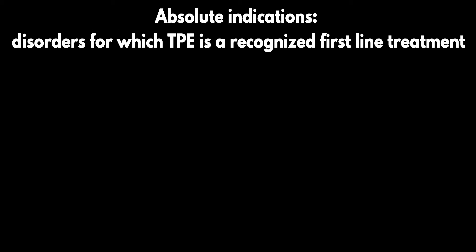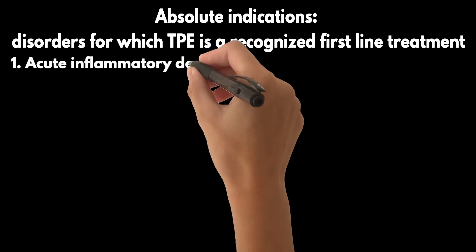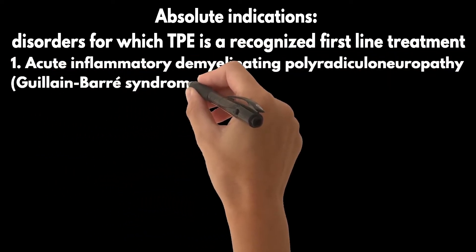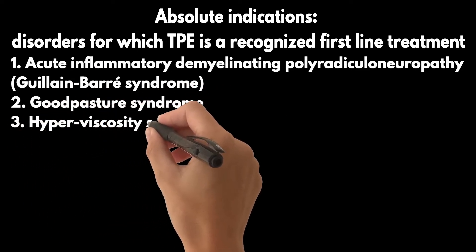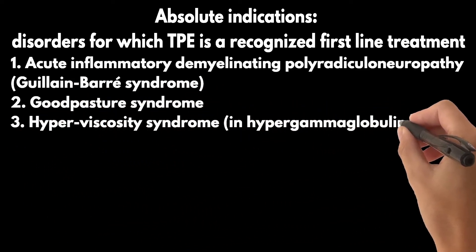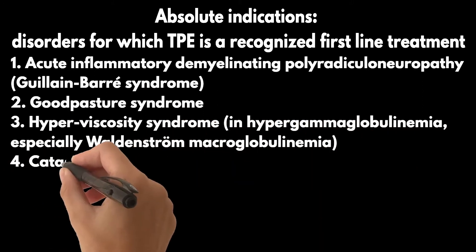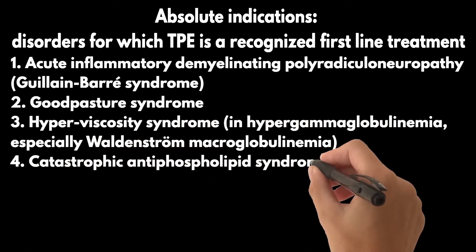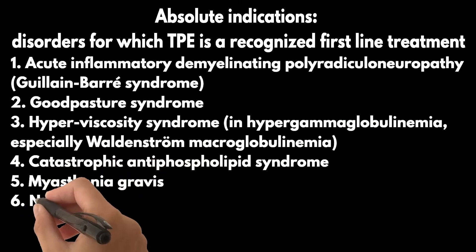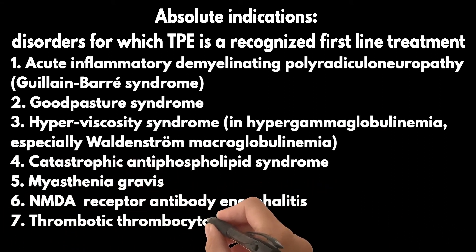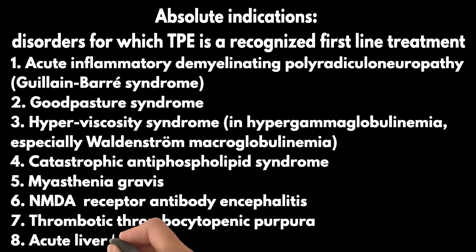Disorders for which TPE is a recognized first-line treatment are: acute inflammatory demyelinating polyradiculoneuropathy (Guillain-Barré syndrome), Goodpasture syndrome, hyperviscosity syndrome in hypergammaglobulinemia especially Waldenstrom macroglobulinemia, catastrophic antiphospholipid syndrome, myasthenia gravis, NMDA receptor antibody encephalitis, thrombotic thrombocytopenic purpura, and acute liver failure.